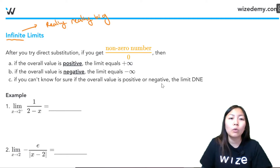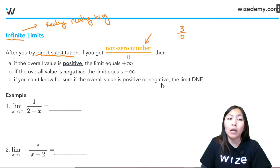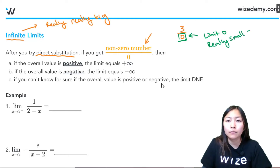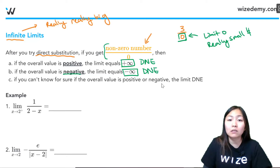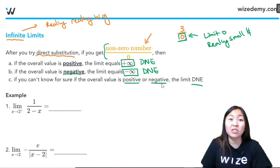Since we're talking about limits, we can say a value approaches infinity. The golden rule with limits is we want to try direct substitution. If you get a nonzero number divided by zero — for example, 3 divided by zero — remember this zero isn't the exact number zero, it's the limit zero, so it's a really small number. A number divided by something really small gives something really big. If the overall value is positive, the limit equals positive infinity, which does not exist as a finite number. If negative, the limit approaches negative infinity, which also does not exist. If we can't determine the sign, the limit simply does not exist.